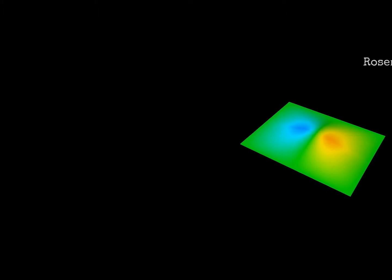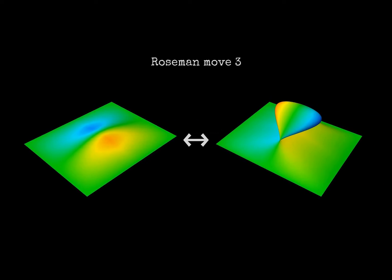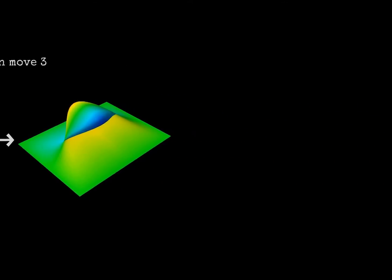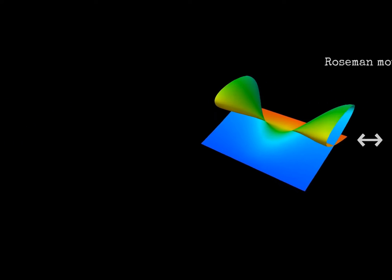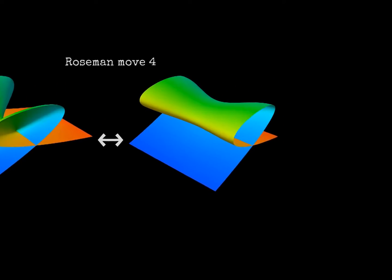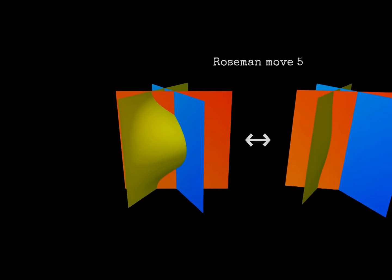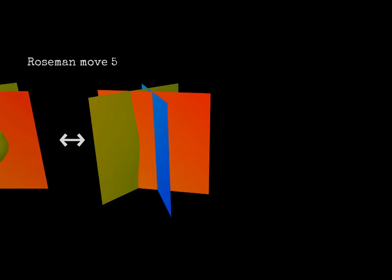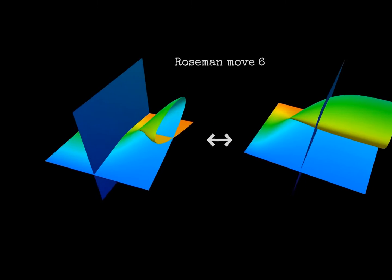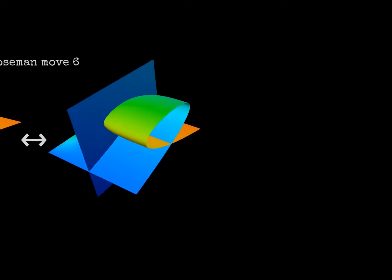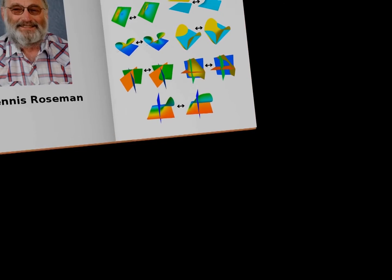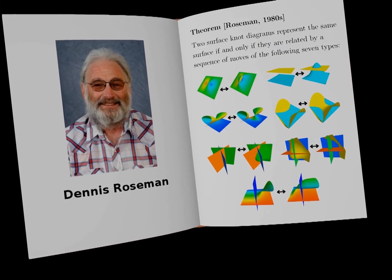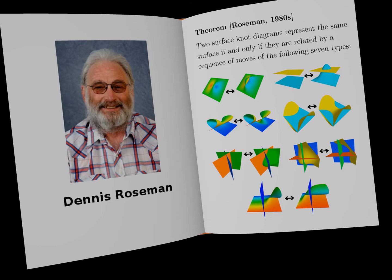We will not go into detail about the four remaining moves which involve branch points and triple points. These moves are named after Dennis Rosemann, who proved that they are sufficient to describe motions of surfaces in 4-space that do not change the type of the knotting.